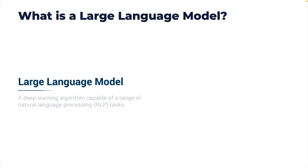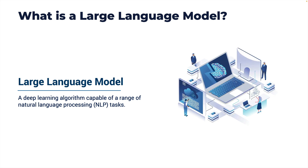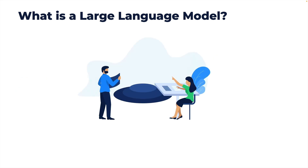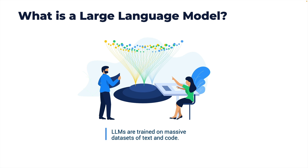A large language model or LLM is a deep learning algorithm capable of a range of natural language processing tasks such as text generation, classification, conversational question and answering, and text translation. LLMs are called large because they are trained on massive datasets of text and code — there may be trillions of words in these datasets, and the quality of the dataset will certainly have an impact on how well the LLM performs.